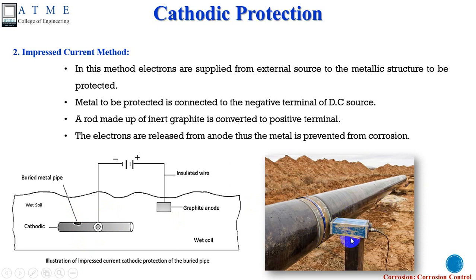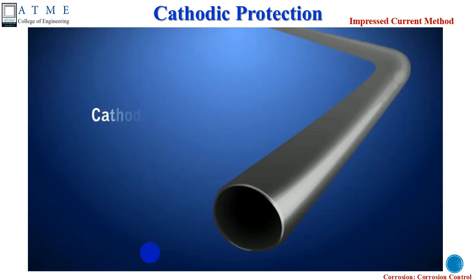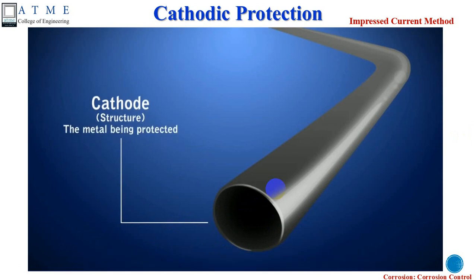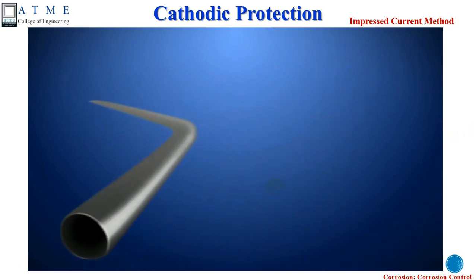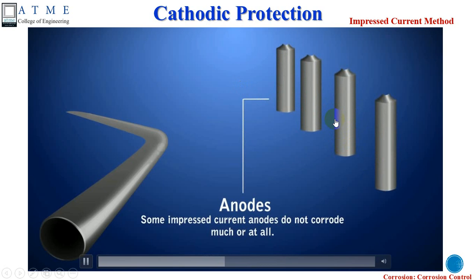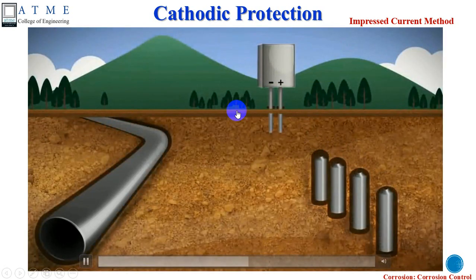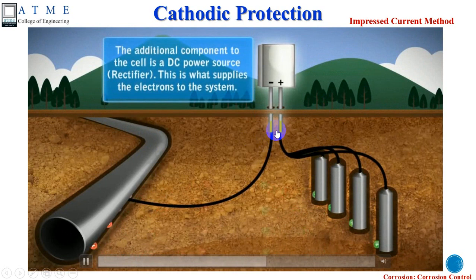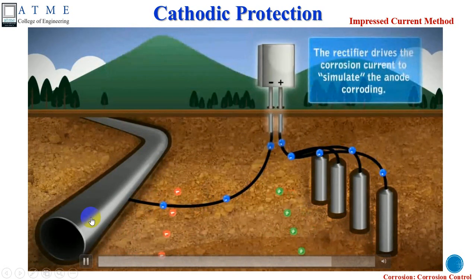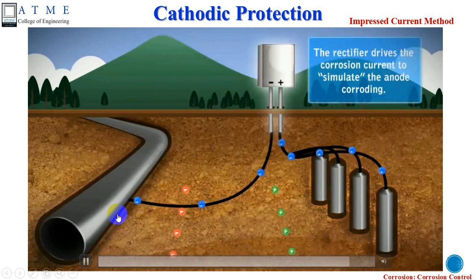The structure to be protected is connected to an external DC source and to inert anodes. When an impressed amount of current is passed from the DC source, corrosion of the base material is prevented. An animated video clearly explains this impressed current method — showing the cathodic structure connected to inert anodes through a DC source, with the impressed current preventing corrosion of the base material.